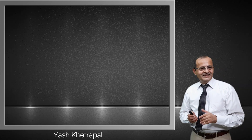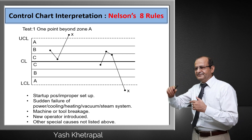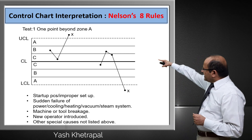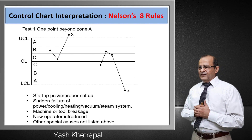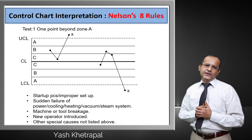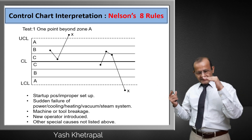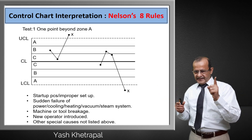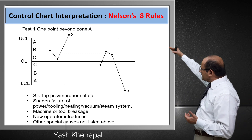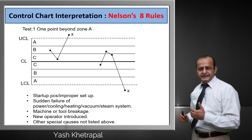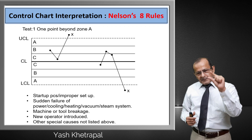Now let's start with Nielsen's 8 rules. Rule 1: one point beyond Zone A. What does this mean? It could be because of a set-up issue — a particular dimension set up incorrectly.